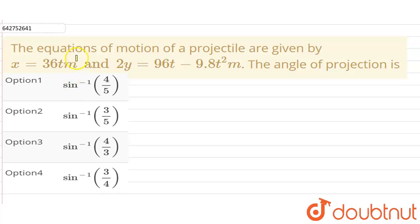Hello everyone, our question is: the equation of motion of a projectile are given by x equals 36t meters and 2y equals 96t minus 9.8t squared meters. The angle of projection is?